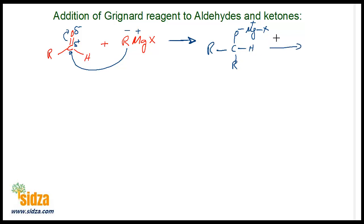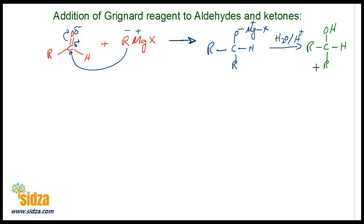After that, when you do the hydrolysis — you react this molecule with water in acidic medium — the magnesium is lost and replaced by hydrogen. So you get R-C-O-H. Hydrogen from the water goes to the oxygen, and you get an alkyl group and hydrogen on the carbon. You also get magnesium with a halogen atom and a hydroxide. So this is the product you get — you get an alcohol.